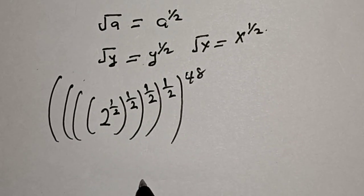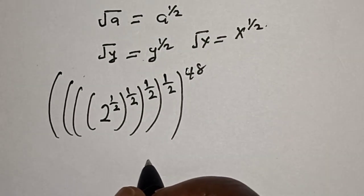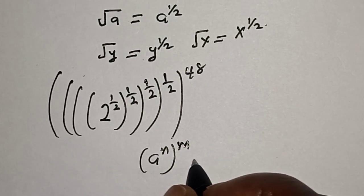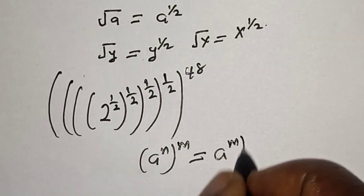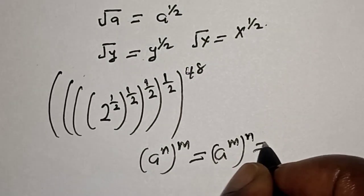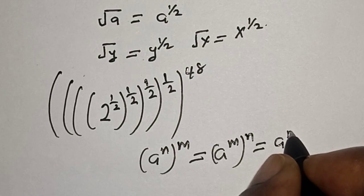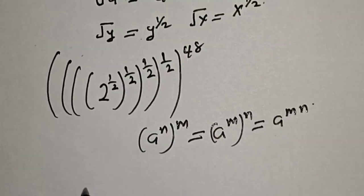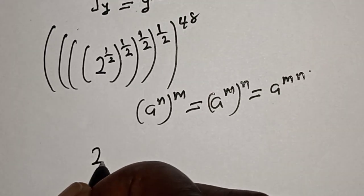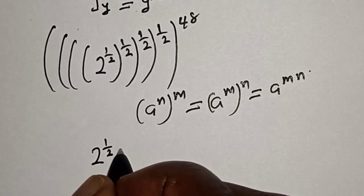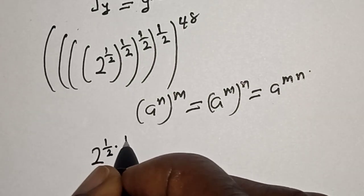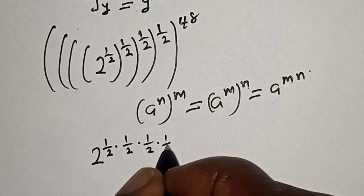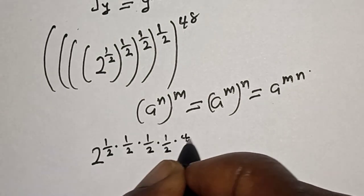Now, remember this: the exponential rule that A raised to the power of N raised to the power of M is equal to A raised to the power of M times N. So this can be written as 2 raised to the power of 1 over 2, multiply by 1 over 2, multiply by 1 over 2, multiply by 1 over 2, multiply by 48.